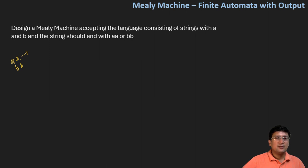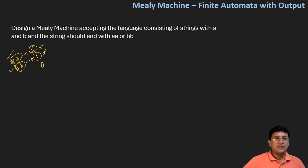If the last input symbols are AA, the machine should produce output one. Similarly, if the last input symbols are BB, it should also produce one. This means whatever output is being produced, the last digit should be one. In all other cases, we can print zero. So the set of output alphabets here are zero and one, and the input alphabets are A and B, which is already given.